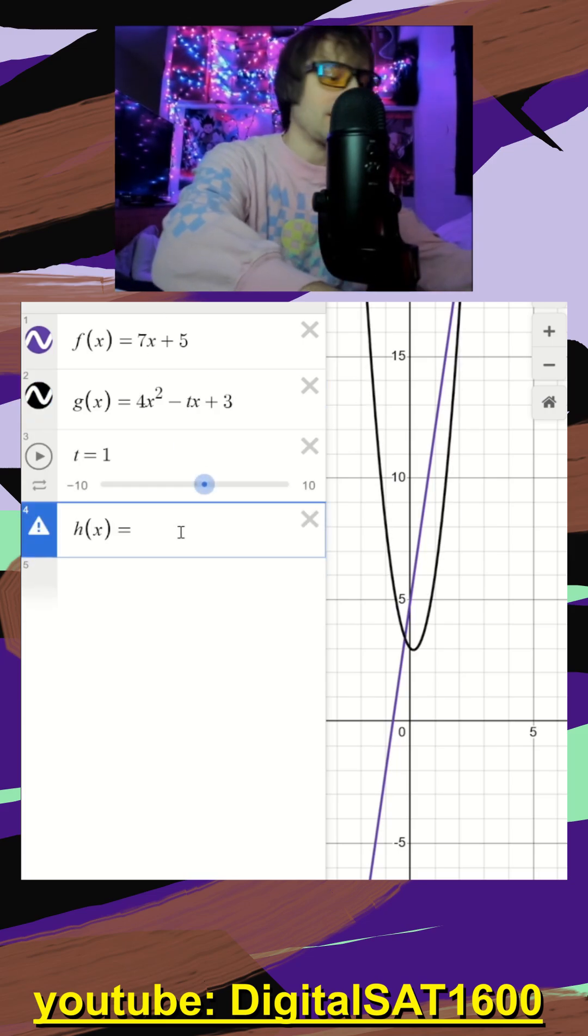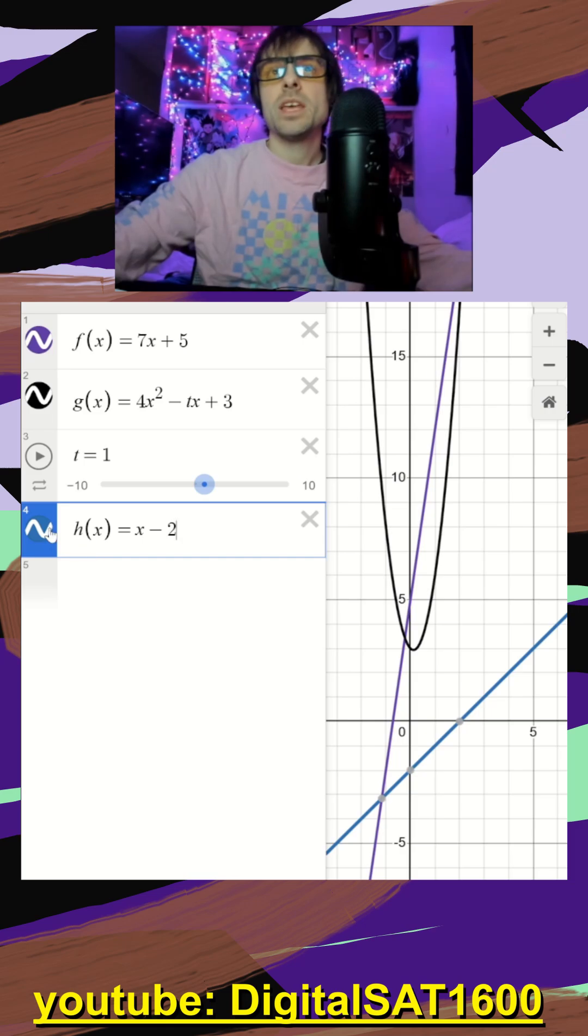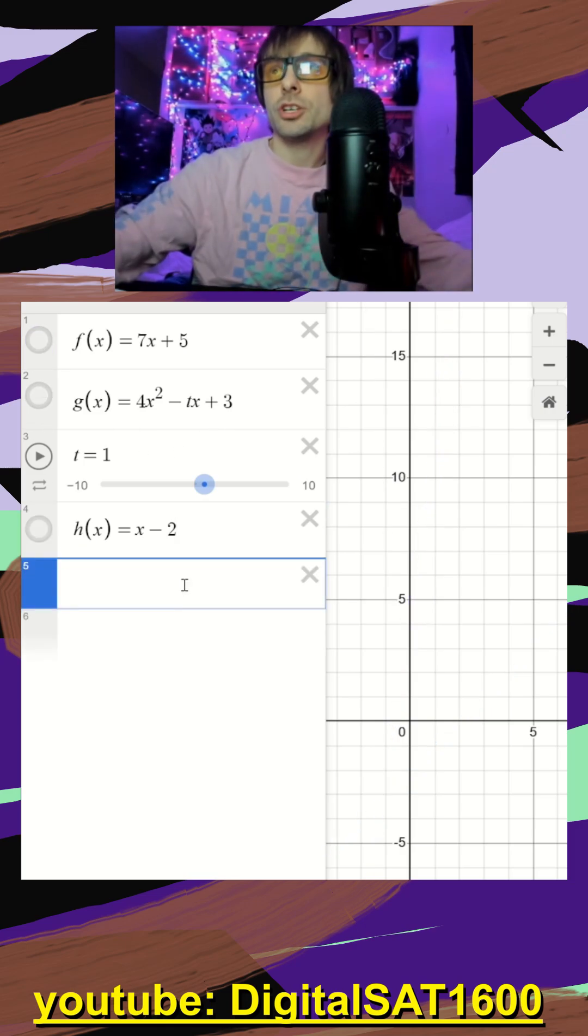And finally, h of x is equal to x minus 2. I'm going to turn these off for now because our primary role is just defining these three functions for Desmos.